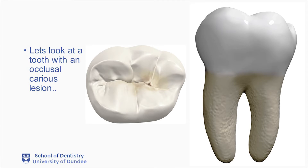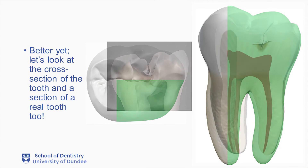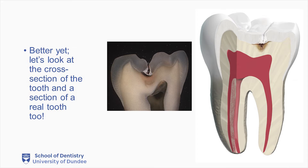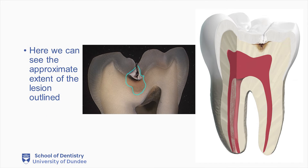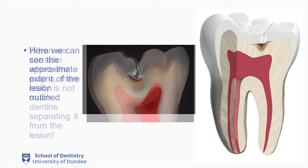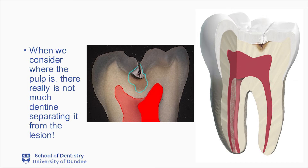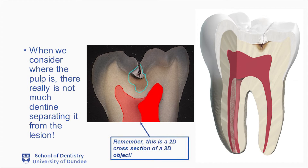Now, for this video, let's look at a tooth with an occlusal caries lesion. Here we can see a simulated drawing of a tooth. Let's look at the cross-section of this tooth and a section of a real tooth as well. Here we can see the approximate extent of the lesion, outlined with the peripheral lines visible on the section. When we consider where the pulp is, there really is not much dentine separating it from the caries lesion. Here you can see an approximation of where the pulp would be in a three-dimensional plane respective to this tooth.